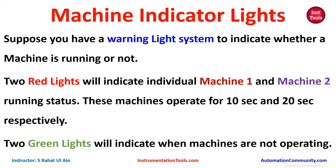Machine Indicator Lights. Suppose you have a warning light system to indicate whether a machine is running or not. Two red lights will indicate individual Machine 1 and Machine 2 running status. These machines operate for 10 seconds and 20 seconds respectively. Two green lights will indicate when machines are not operated. For this example, we will use normally open contacts, memory bits, and timers like TP and T-on.